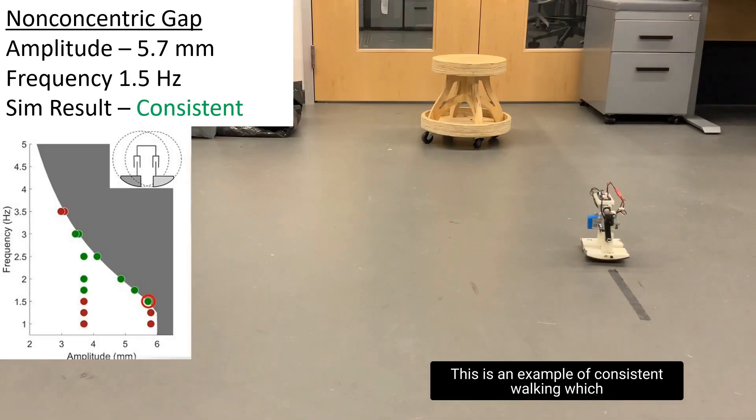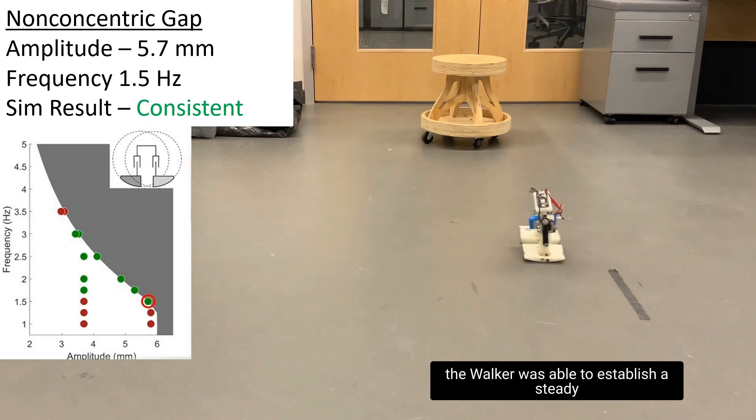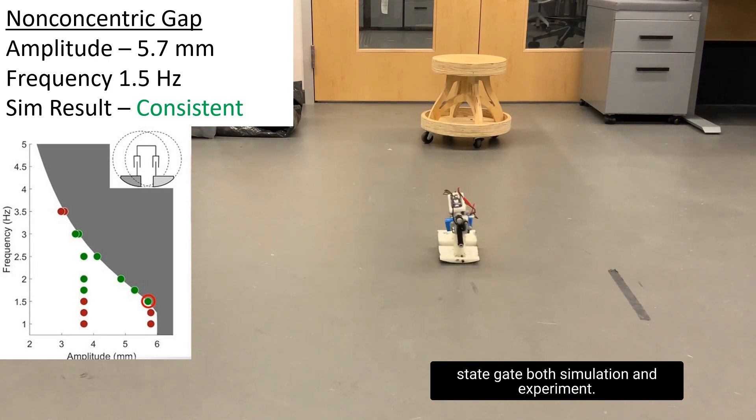This is an example of consistent walking in which the walker is able to establish a steady state gait, both in simulation and experiment.